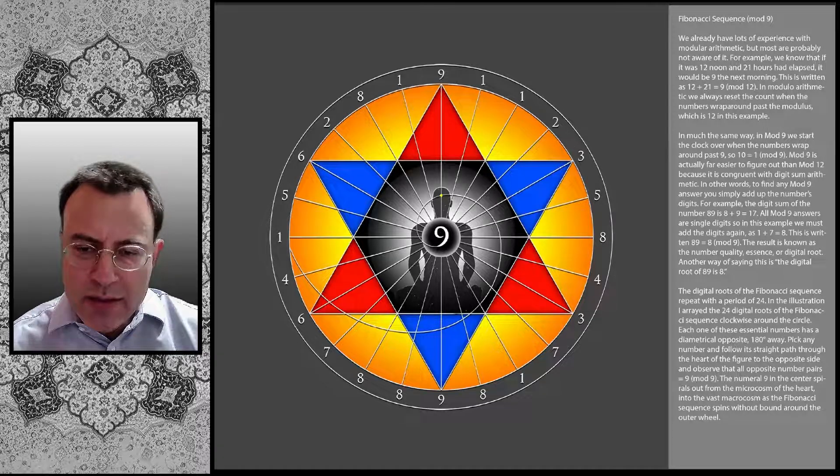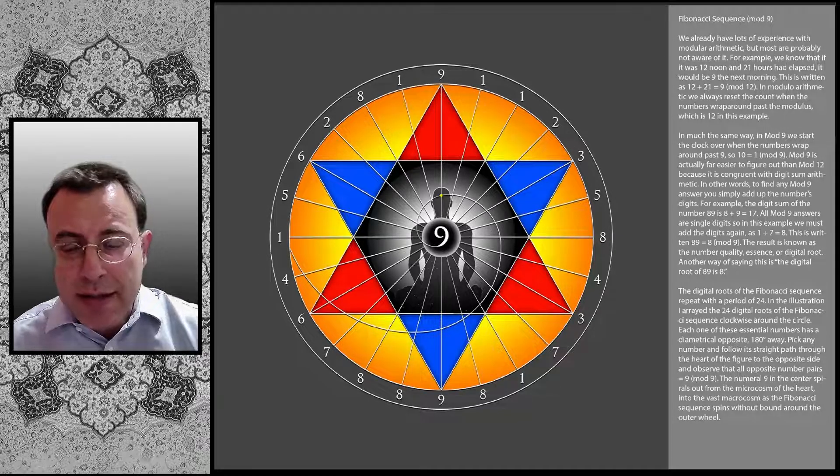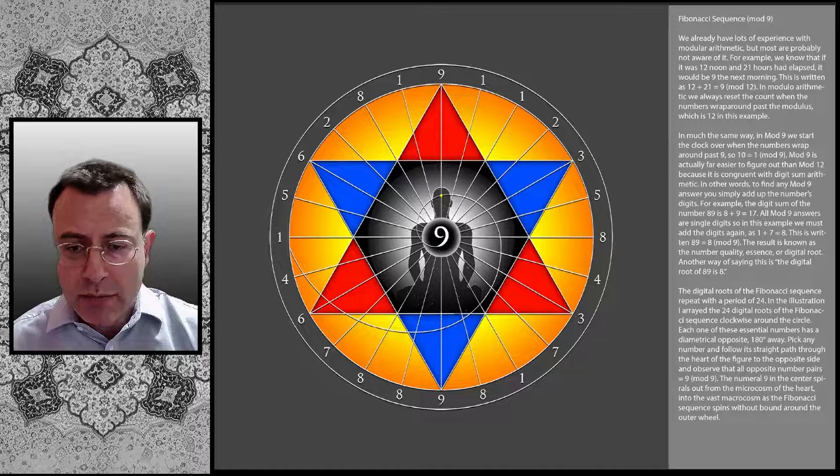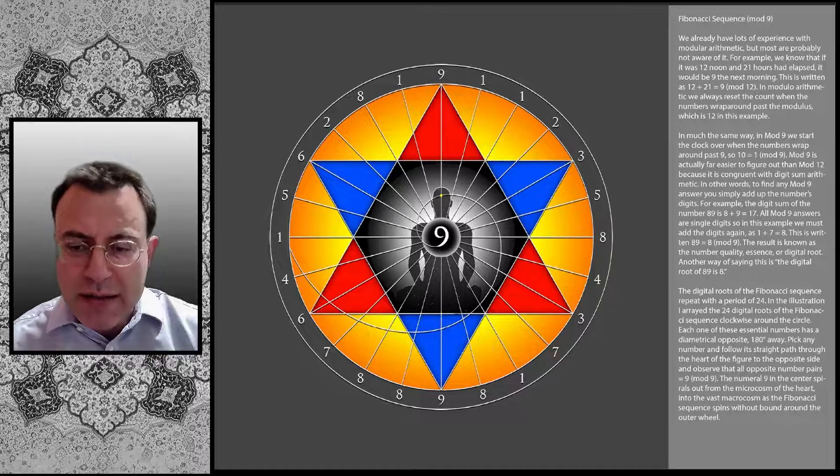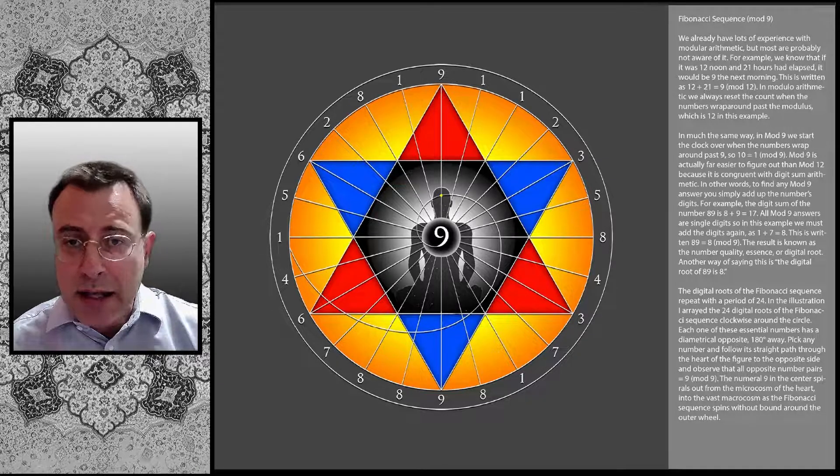The result is known as the number quality, essence, or digital root. Another way of saying this is, the digital root of 89 is 8.